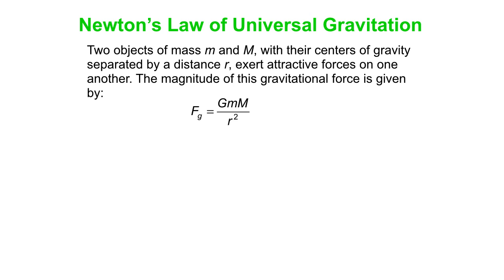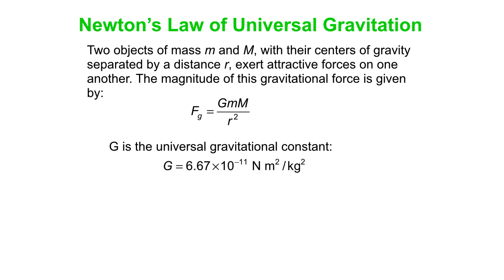The magnitude of the force is given by capital G — that's a constant — multiplied by the product of the masses and divided by the square of the distance between their centers. G has a value of 6.67 times 10 to the minus 11 newton meters squared per kilogram squared.